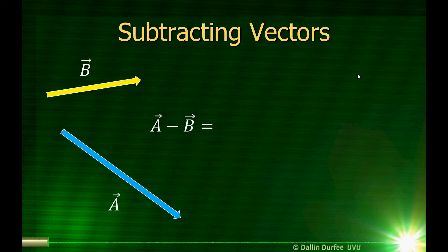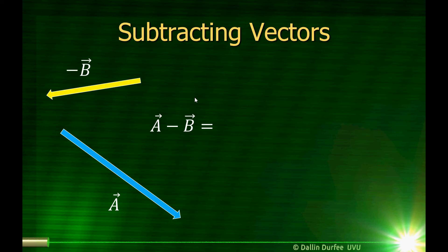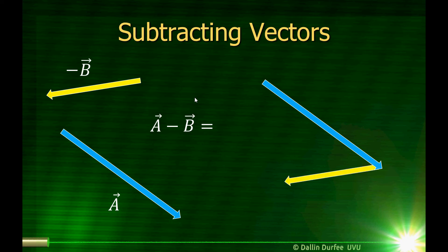Subtracting vectors is pretty much the same as adding them, because A minus B is really just A plus negative B. Looking at our B vector — our yellow vector — to turn B into negative B, I just have to flip the vector around. So now I have negative B. A minus B is just A plus negative B, and there's the result of A minus B.